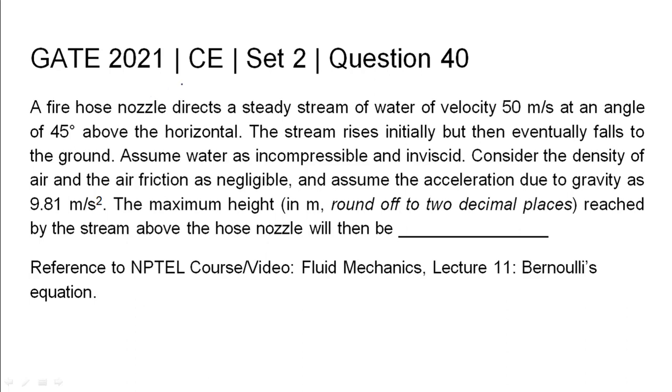GATE 2021 civil engineering set 2, question 40. A fire hose nozzle directs a steady stream of water of velocity 50 meters per second at an angle of 45 degrees above the horizontal. The stream rises initially but then eventually falls to the ground. Assume water as incompressible and inviscid. Consider the density of air and air friction as negligible.